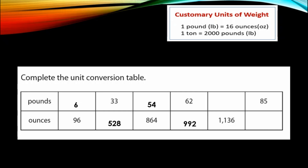Next column: 1,136 ounces equals how many pounds? The answer is 71. If you got the correct answer, it means you learned. Next: 85 pounds equals how many ounces? If your answer is 1,360, you are amazing.